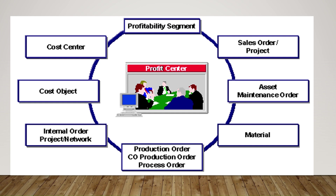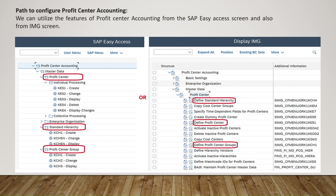You can configure profit center accounting using either the SAP Easy Access screen or the IMG screen. From Easy Access, under Profit Center, go to Standard Hierarchy where you have profit center groups. In the IMG screen, select Profit Center and you have multiple transactions like Define Standard Hierarchy, Define Profit Center, Define Profit Center Groups, etc. Both the Easy Access and IMG screens can be used to access these transactions.